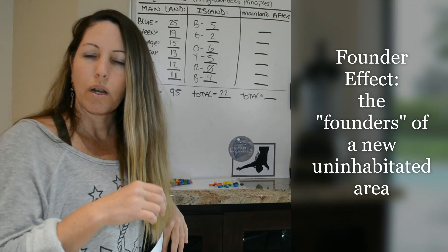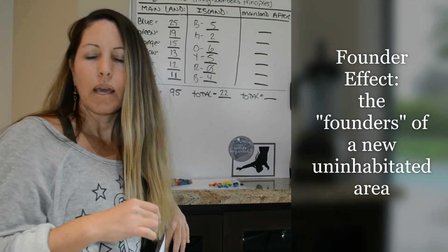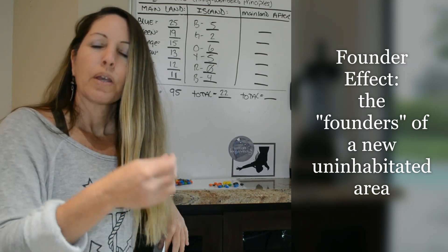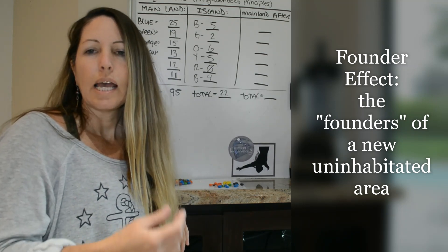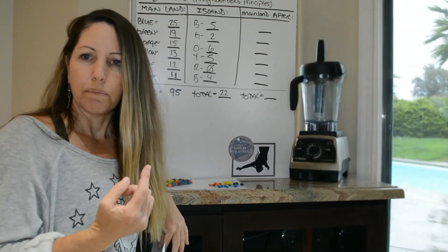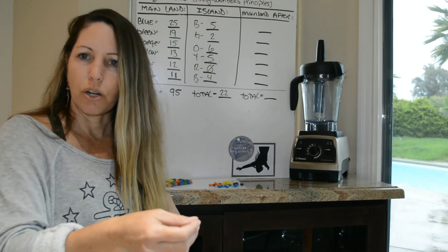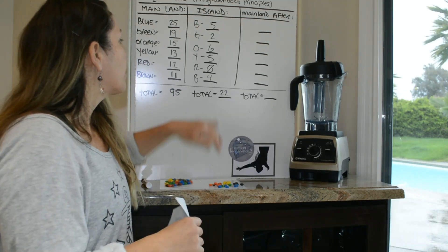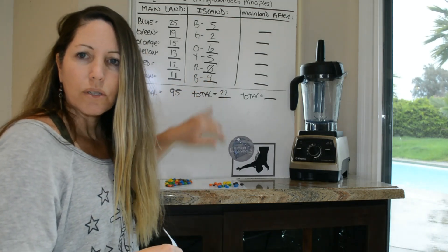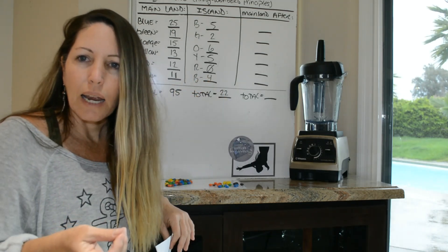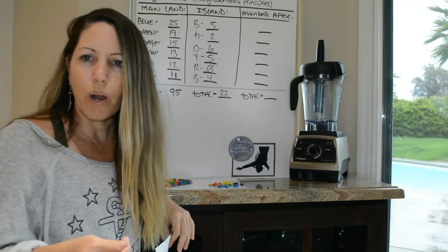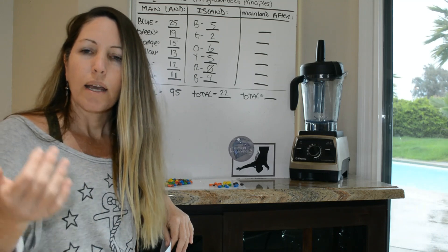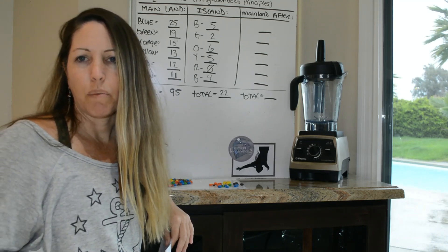So if these organisms were never on the island to begin with, then this is known as a founder effect. They have founded this new specific habitat. Now they're all going to interbreed. Now the next generation to come, notice here, based on our data, that there is no red alleles. Guys, there's no red DNA. There's no genotype for red to be passed on to those children. So therefore, red has now become extinct within that population.